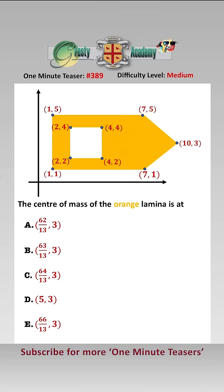By inspection, we have the area of the rectangle is equal to 6 times 4, which is 24. The area of the square hole we have is 2 by 2, which is 4. And the area of the triangle is equal to base times perpendicular height, divided by 2, which is equal to 4 times 3, divided by 2, which is equal to 6.